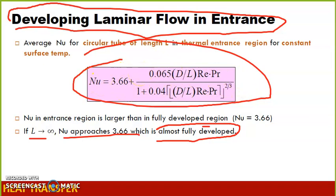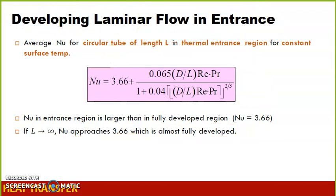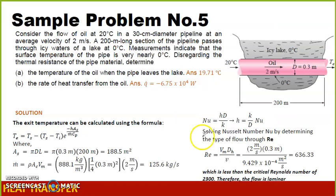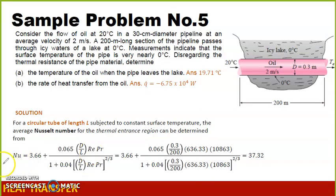So that's why we can use this equation. We will use this equation for finding the value of the Nusselt number. For the Nusselt number, we just substitute what we already have: diameter 0.3, length which is 200 meter.